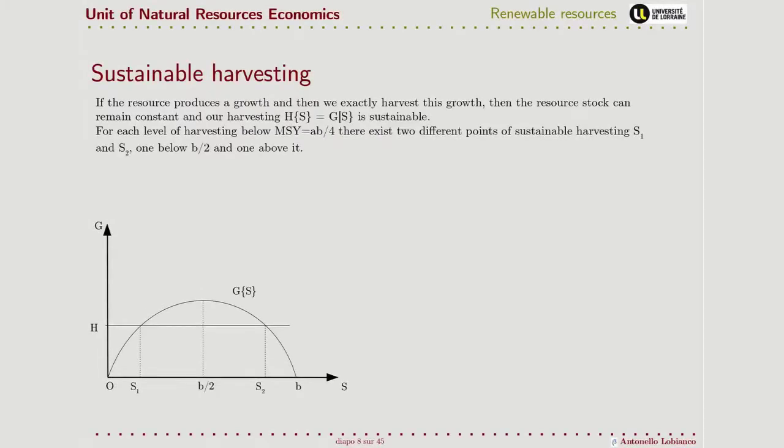Why did we use a new variable G instead of simply calling this one variation in the stock? Well, these two are the same if there is no harvesting.